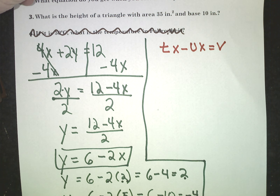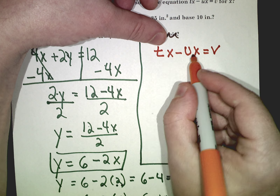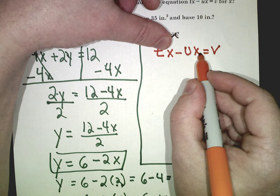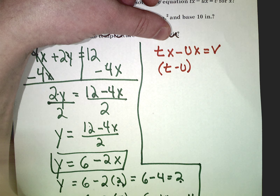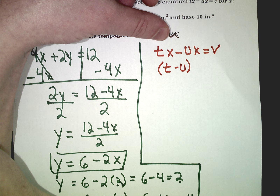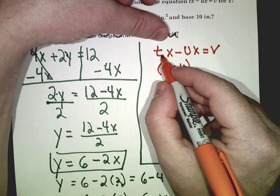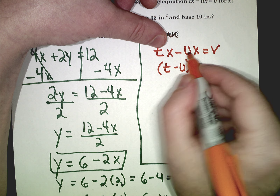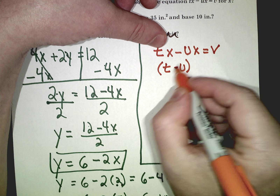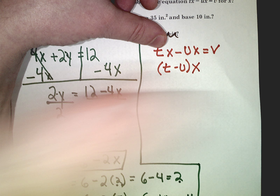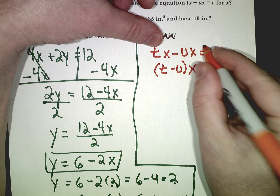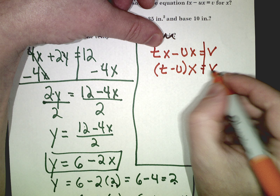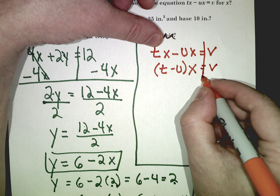All letters, no numbers — that's okay. Normally I combine like terms. Tx minus ux — I can't give you an answer to what t minus u is yet, until you give me the numbers. But I know I'm going to combine them. When you give me what t is and what u is, I'll plug it in there. For now I'll just say I'm going to do that — take t minus u, combine like terms, times x equals v.